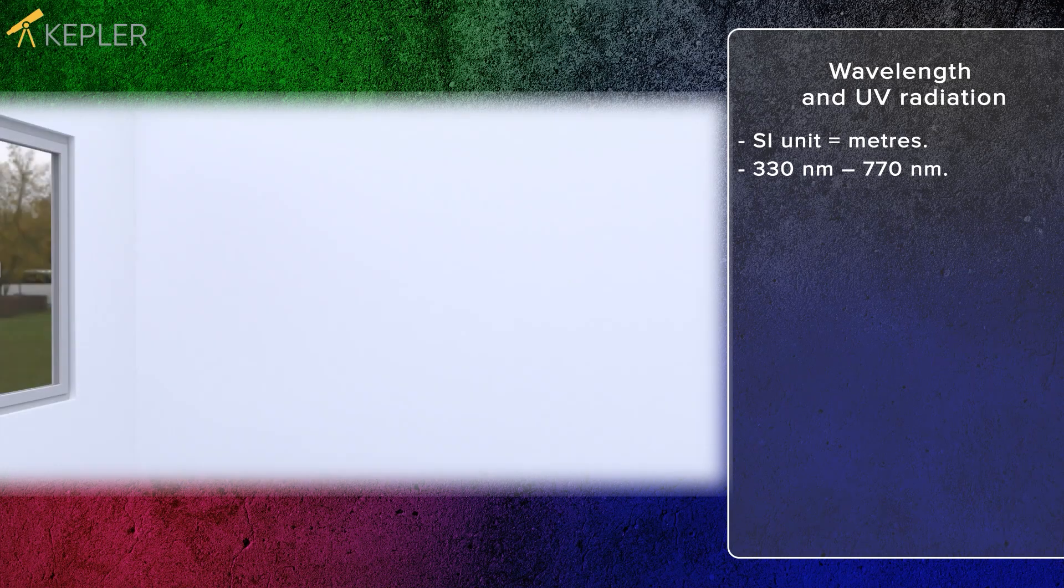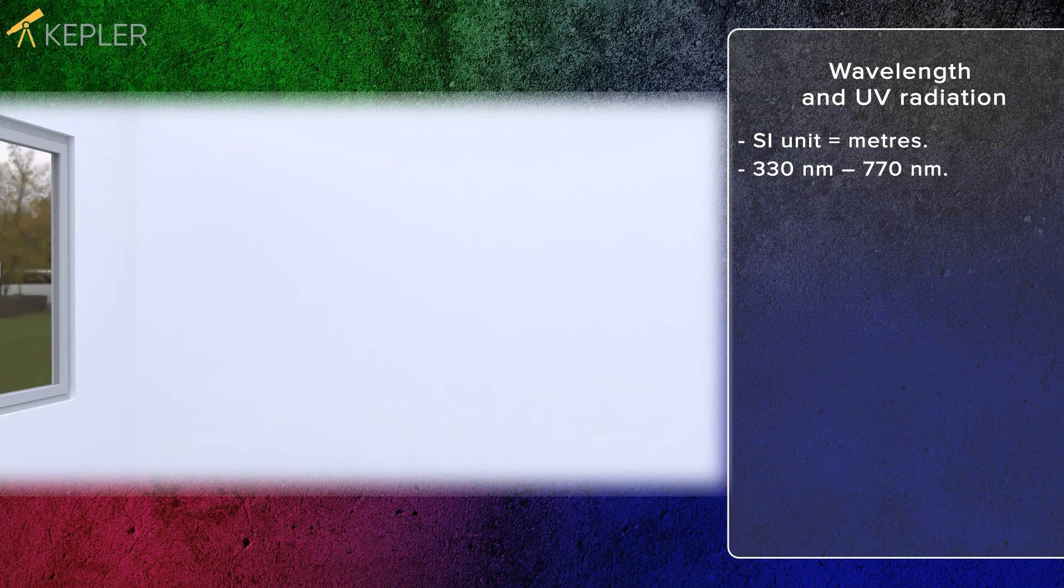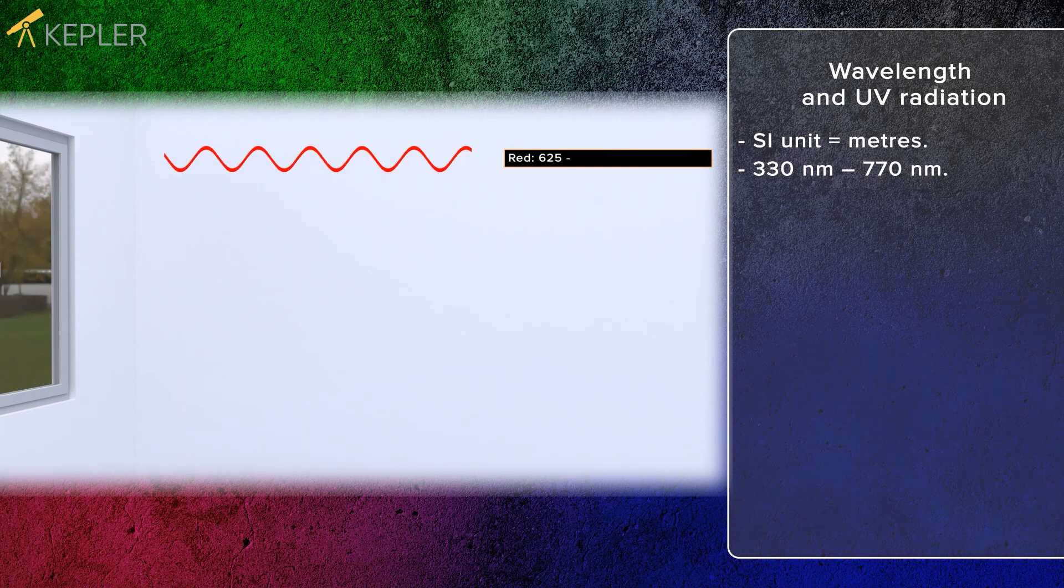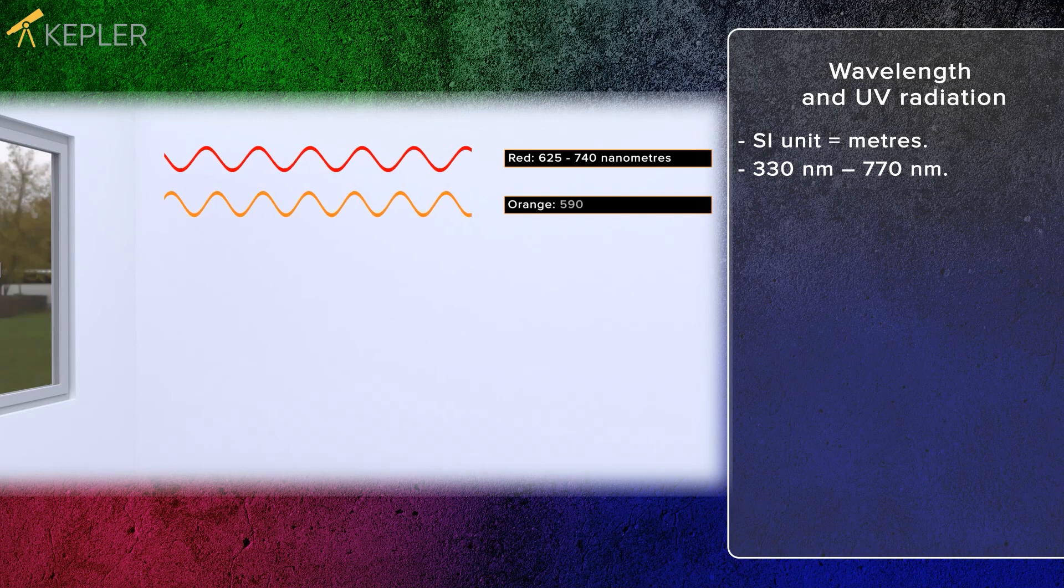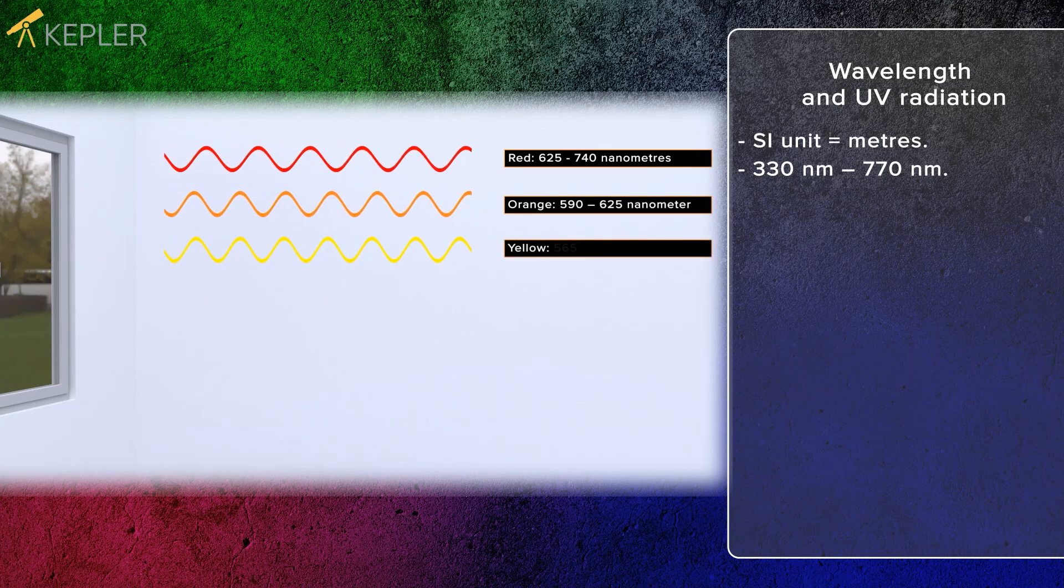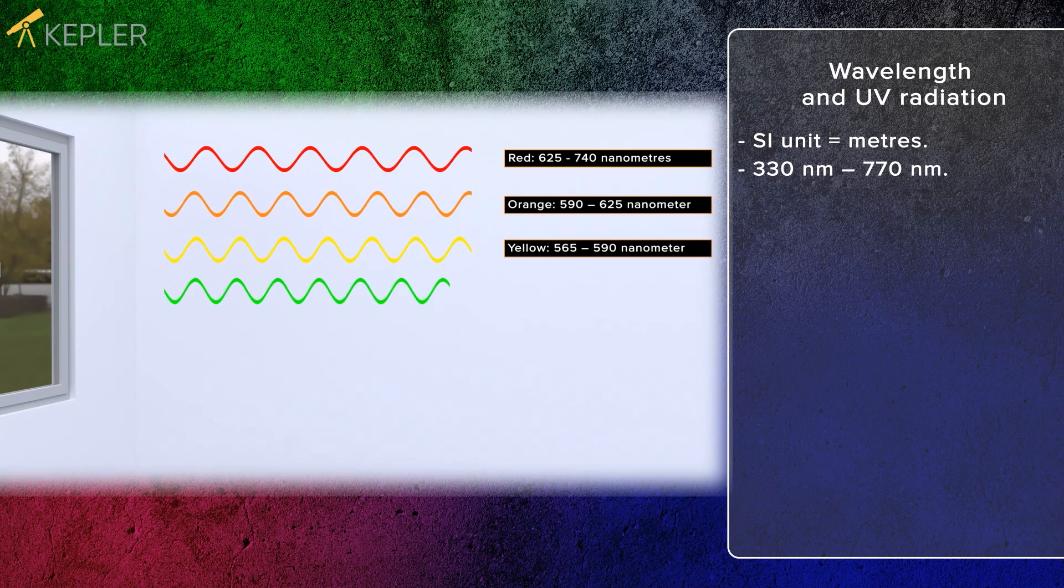The eyes see different colors depending on the wavelengths. The wavelengths of different colors are red, 625 to 740 nanometers; orange, 590 to 625 nanometers; yellow, 565 to 590 nanometers; and green, 520 to 565 nanometers.